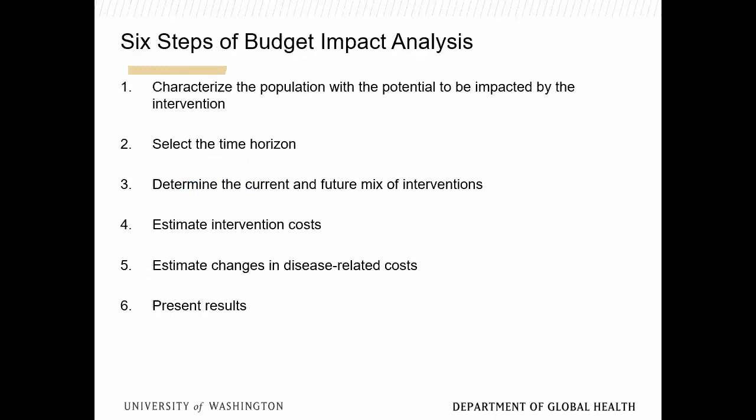There are six steps in budget impact analysis: characterize the population; select a time horizon, usually three to five years; determine the current and future mix of interventions — if you have a displacement intervention you take out what's being displaced, but if it's an add-on you need to characterize what will be displaced at what rate; then do the cost side; then do the cost offset; and then present results.